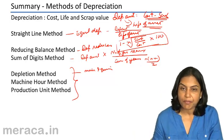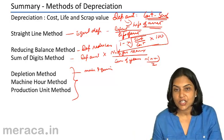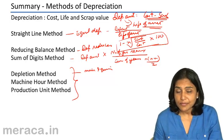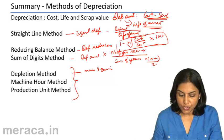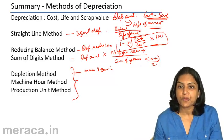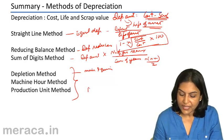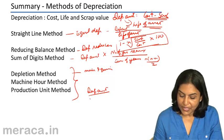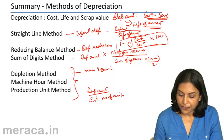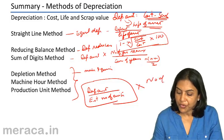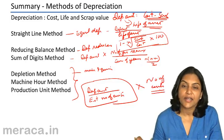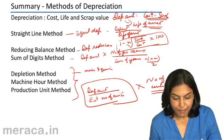Under the production unit method, the life of the asset is determined as the total number of units expected to be produced. The depreciation rate per unit is computed as the depreciable amount divided by the total estimated number of units produced. This rate multiplied by the number of units produced gives the depreciation for the respective year.